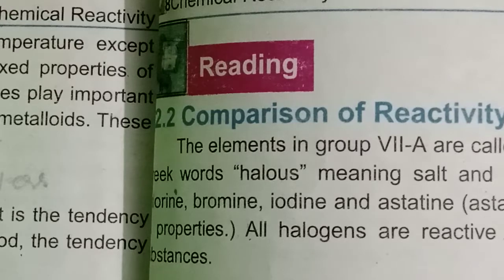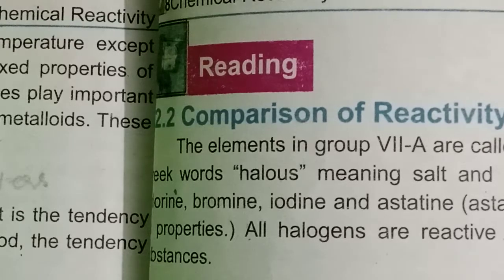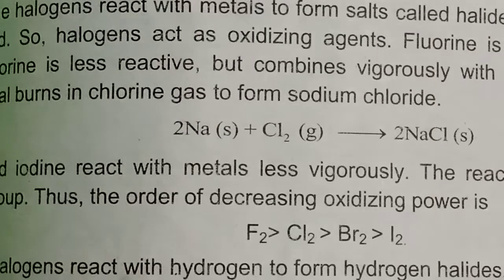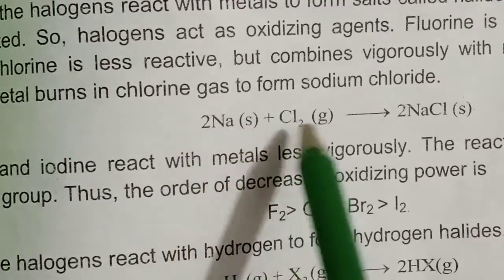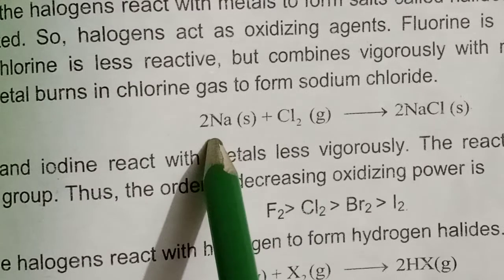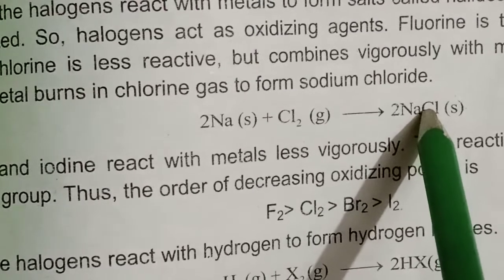Fluorine is the most reactive halogen. Chlorine is less reactive than fluorine but still combines vigorously with many metals. In this equation you can see that sodium is a metal and chlorine is a non-metal. Chlorine reacts with sodium to form sodium chloride — and this is the salt.